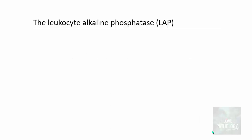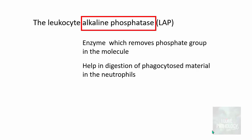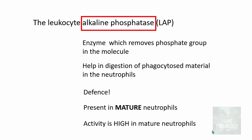The alkaline phosphatase in the leukocyte is an enzyme which removes a phosphate group from a molecule, and that helps in digestion of phagocytosed material in the neutrophils. This helps in the defense mechanism of these leukocytes. Importantly, this alkaline phosphatase is present in mature neutrophils or mature leukocytes — not in immature cells — and the activity is extremely high in mature leukocytes.